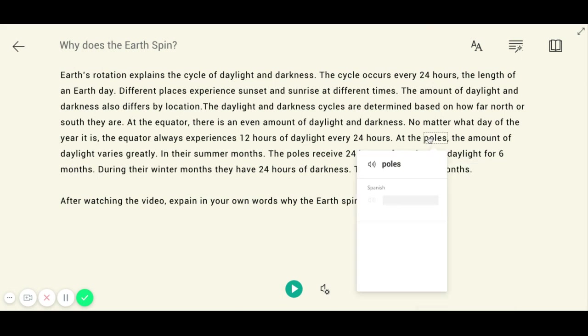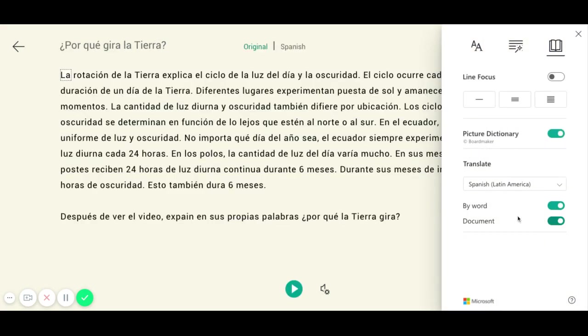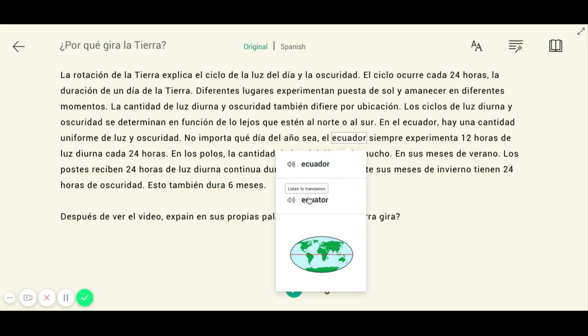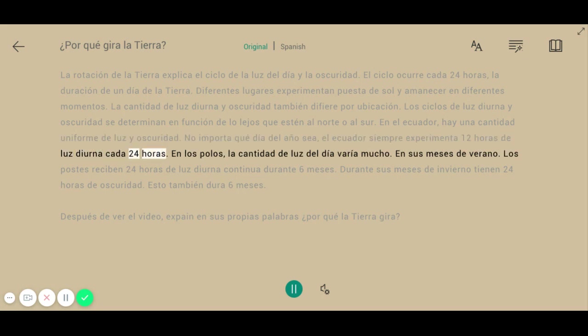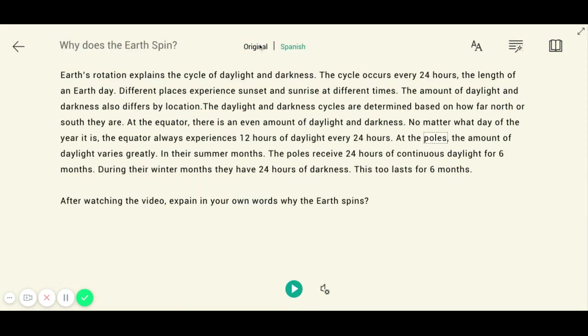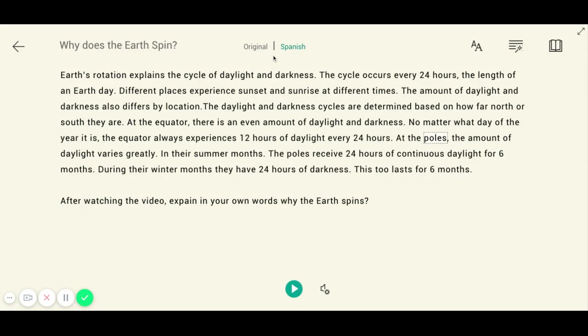Right here is the Spanish version. If I click on a word, I can listen to that. I can change it to the whole document. Now this entire document is in Spanish. If I click on a word, it gives me the Spanish and also the English version. If I press play, it reads in Spanish. I can toggle back and forth between the two languages right here. This makes it really easy to translate the document into another language.